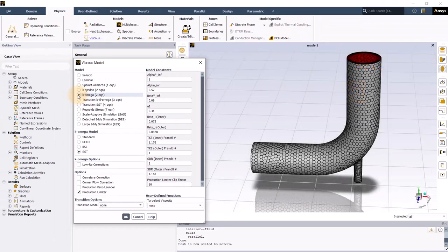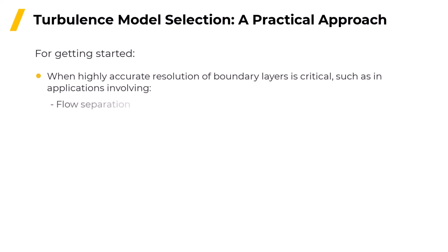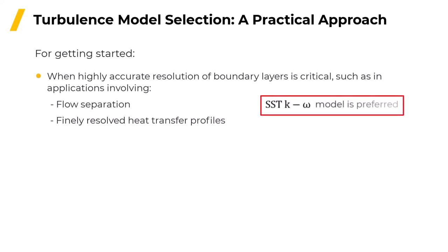If you experience convergence problems, there are some alternatives listed here. When highly accurate resolution of boundary layers is critical, such as in applications involving flow separation or finely resolved heat transfer profiles on walls, then the SST k-omega model is the preferred choice.